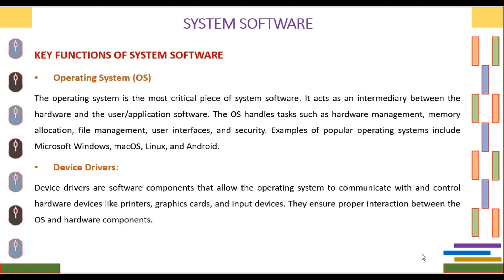The first function of system software is the Operating System (OS). The operating system is the most critical piece of system software. It acts as an intermediary between the hardware and the user or application software. The OS handles tasks such as hardware management, memory allocation, file management, user interfaces, and security. Examples of popular operating systems include Microsoft Windows, macOS, Linux, and Android.